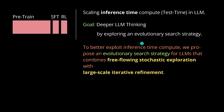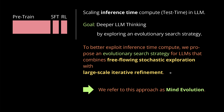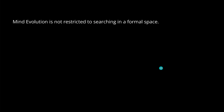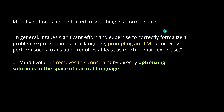And now Google goes to the next step. They propose an evolutionary search strategy that combines free-flowing stochastic exploration and large-scale iterative refinement. They call this Mind Evolution in marketing terms. The idea is that this methodology is not restricted to searching in a formal space — with RAG, we have a vector space or some embedding or some other mathematical space. But now we do all of this simply by optimizing solutions in the space of natural language.